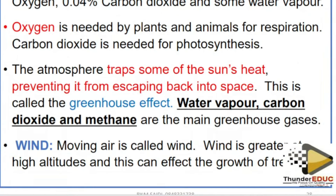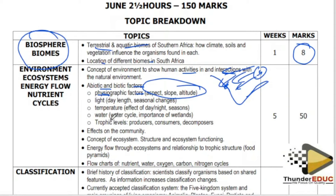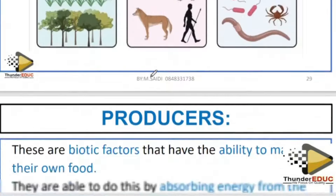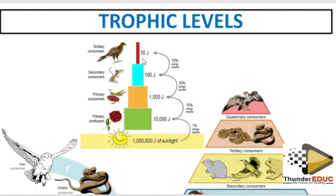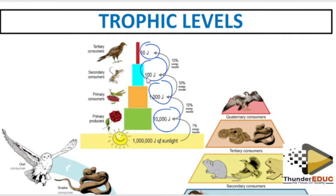We have talked about water and light. Trophic levels — producers, consumers, and decomposers — are very easy to answer. What tricks students is how energy is lost: how much energy is transferred from one trophic level to another, which is 10%. Please know this energy calculation.